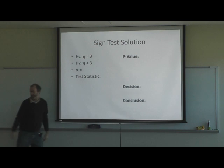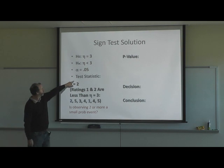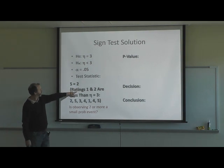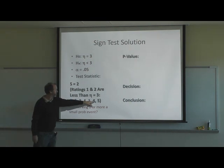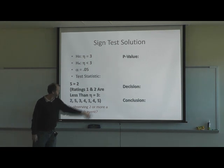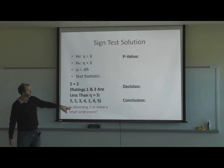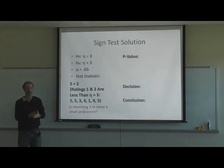Alpha is equal to 0.05. So S equals the count of values below three. The results from the seven people were: 2, 5, 3, 4, 1, 4, and 5. So we have two values below three. Is observing two or more a small probability event? We have to look that up in a binomial table.